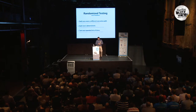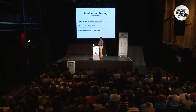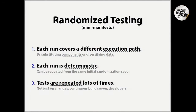What is randomized testing about? What are the main points? There are three. First, ideally we would like our tests to run a different execution path on every execution — every execution will run a different set of code paths through your program. This is done by either substituting components at runtime or substituting data, diversifying data fed to the program. I'll show you how it's done in a bit.